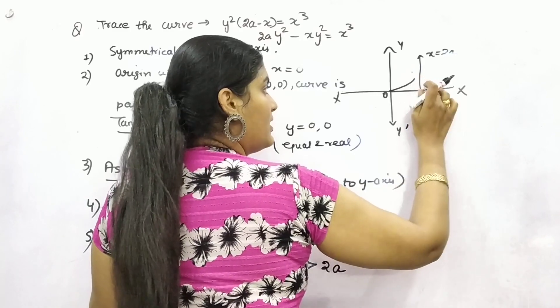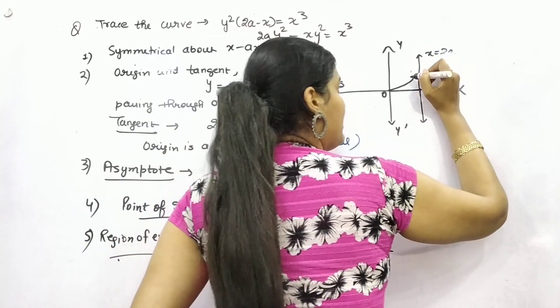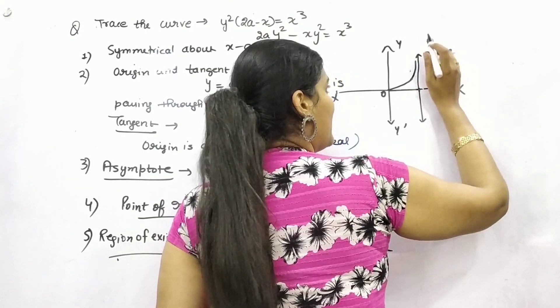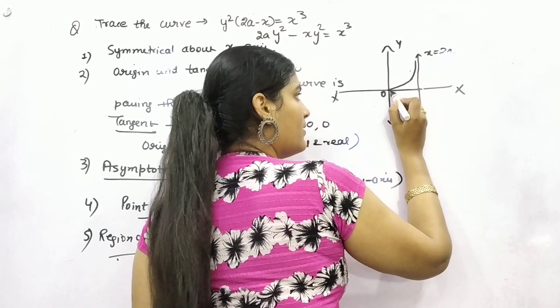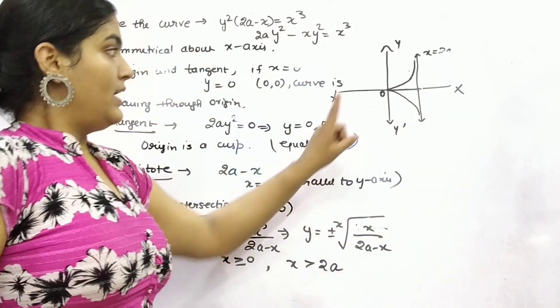That means your curve is starting from here. Now you cannot pass it through this, because this is asymptote. It will intersect it, but at infinite point.